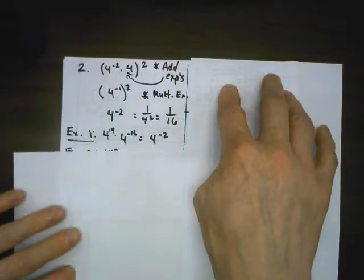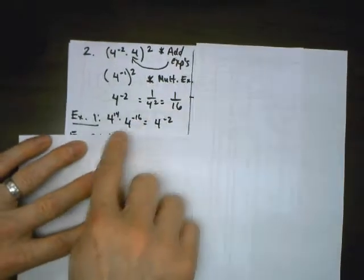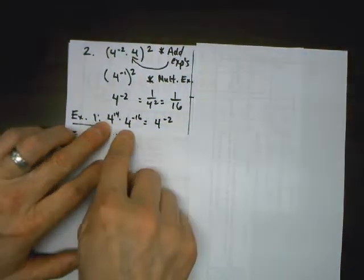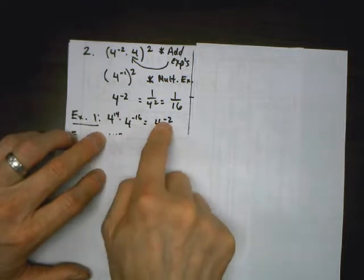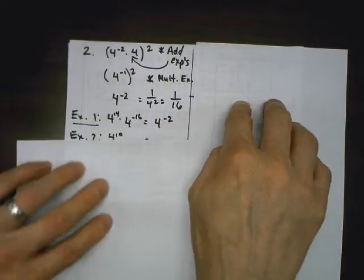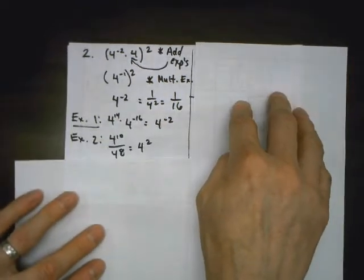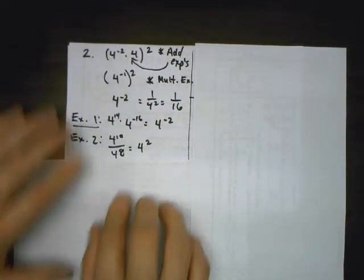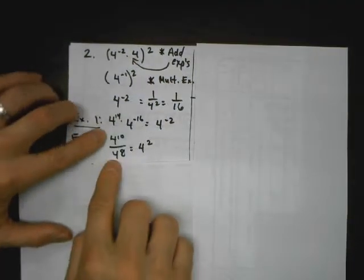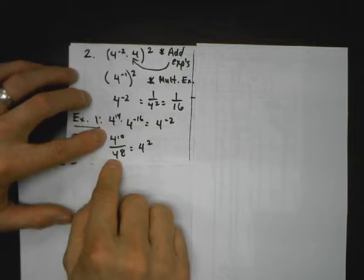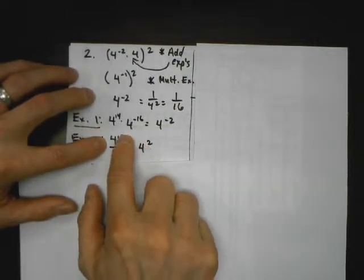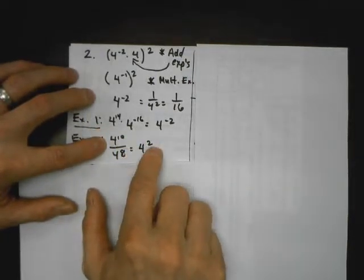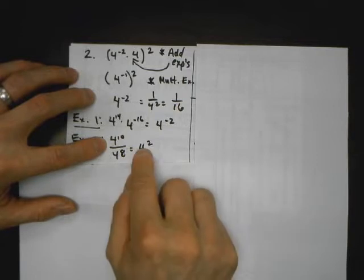Looking at the other expressions: expression 1, I copy that 4 and I add 14 and negative 16 — that's negative 2, which is the same. Expression 2: when I have 4 to the 10th over 4 to the 8th, I copy the base and subtract the exponents. 10 take away 8 is 2. That's not the same as negative 2.